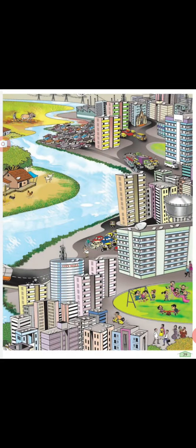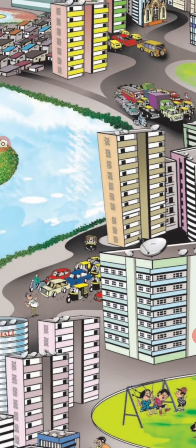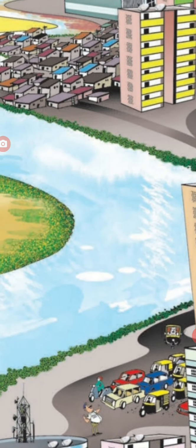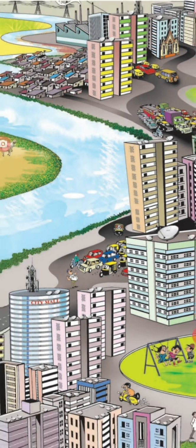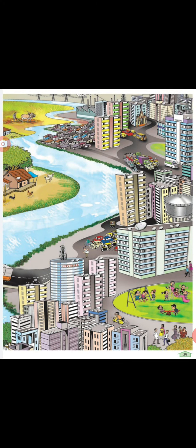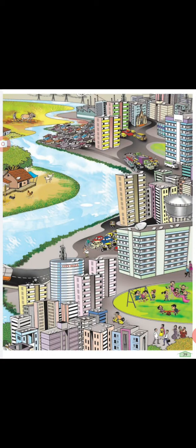Now, the next picture. You can see buildings, cars, children playing in the park, a scooter, people walking on the road, traffic jams, small houses — that is a slum — and factories. Everywhere there are buildings. In the village, houses are very small and there is more greenery. But in the city, you find very less greenery and buildings everywhere.